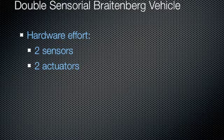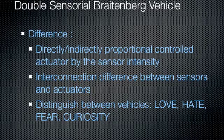A possible extension of the Breitenberg vehicle is the double sensory Breitenberg vehicle. This vehicle now has two sensors and two actuators. According to this extension, the following differences to the simple vehicle are created. Firstly, the actuator can be controlled directly or indirectly proportional by the sensor intensity. Secondly, the interconnection between sensors and actuators can be changed. Considering these two points, it is possible to distinguish between the vehicles: love, hate, fear, and curiosity.